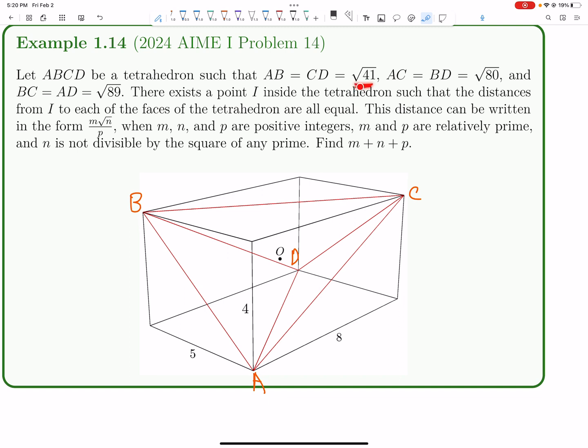And the thing is, these numbers are a little bit strange. Like, why would they get such exact numbers? Okay, so there's a point I inside the tetrahedron such that the distances are all equal. This distance can be written in the form, basically, find the distance.